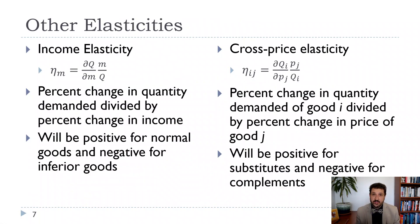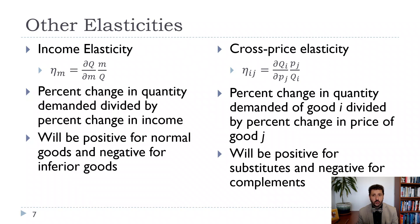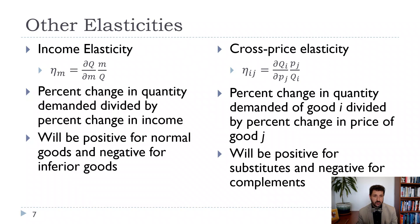There are lots of other elasticities in economics. Income elasticity is the percent change in quantity demanded due to a percent change in income, written as delta Q / delta M times M over Q. It will be positive for normal goods and negative for inferior goods — we don't put a negative sign in there because the sign of the income elasticity actually tells us something.